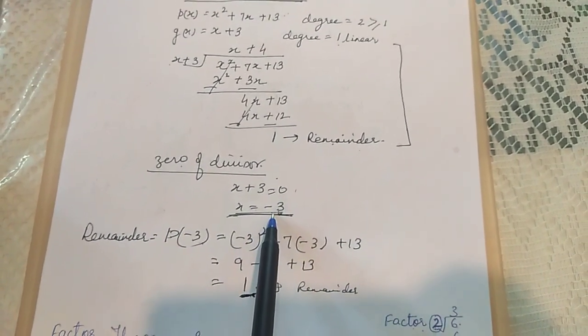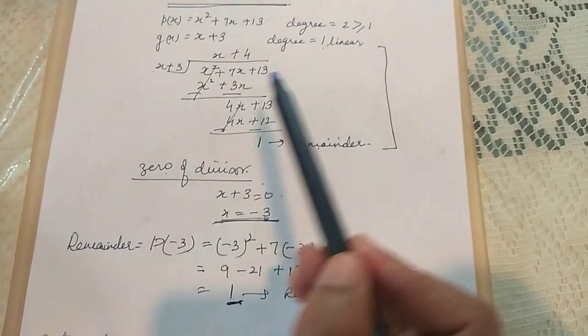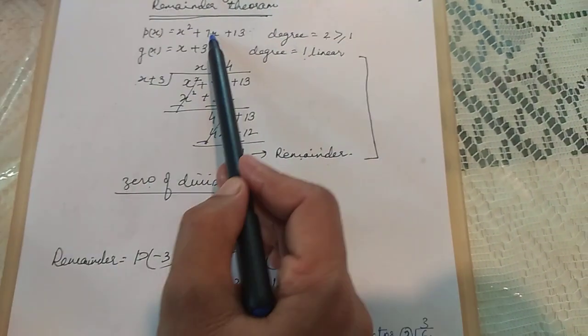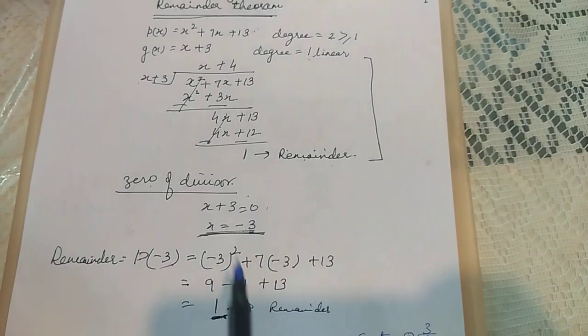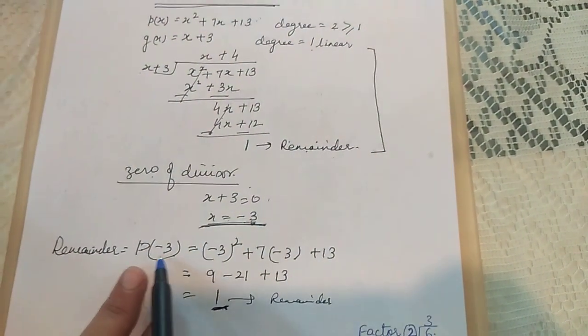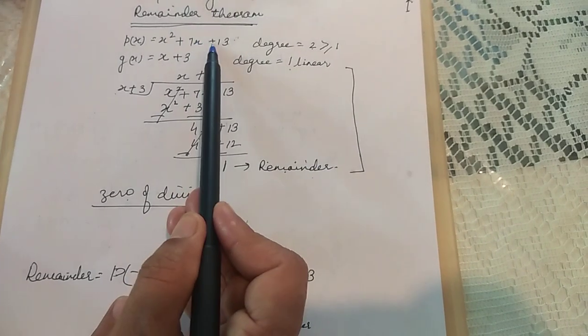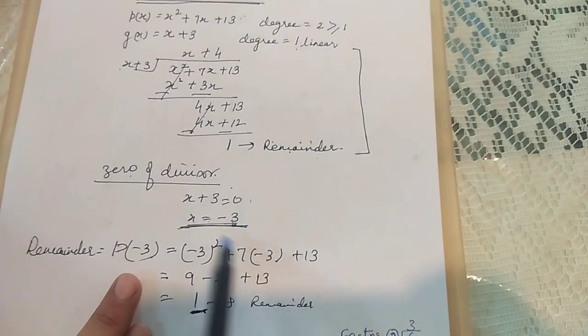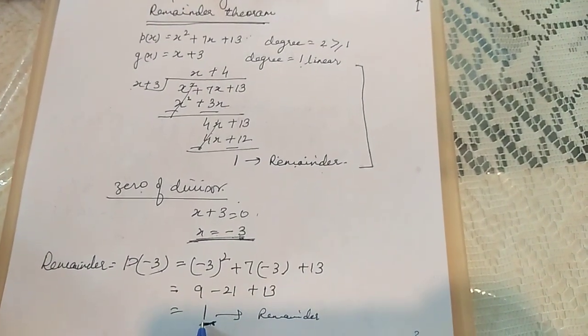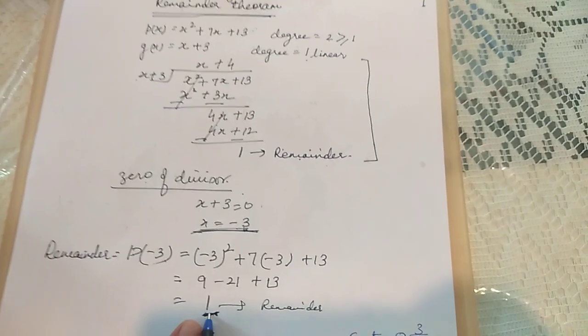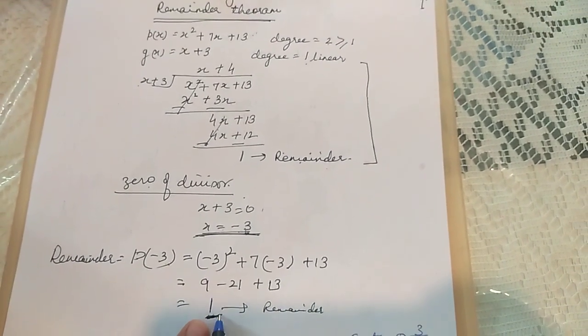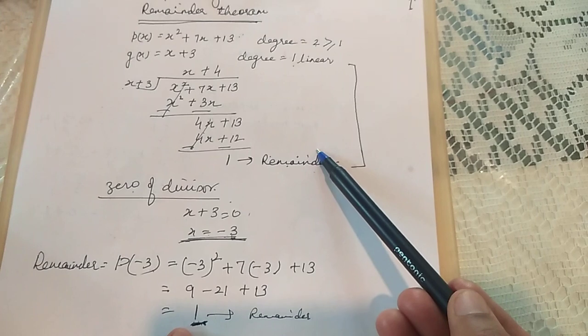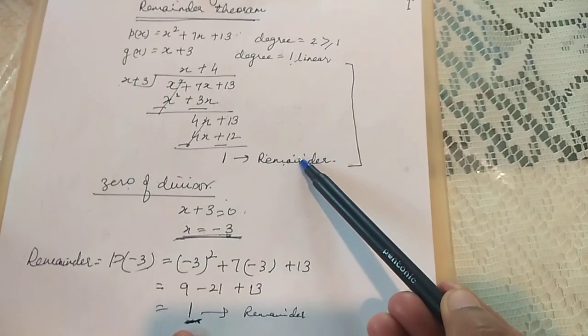Now put the value -3 in the given polynomial, that is p(x). So when you put the value it is p(-3). Wherever x is there, you put -3. So on calculating I get the value as 1. Now this 1 here is called the remainder and it is verified through the long division also that the remainder is the same, that is 1.